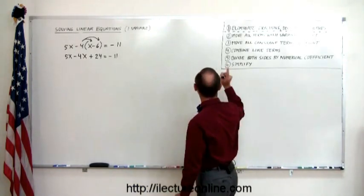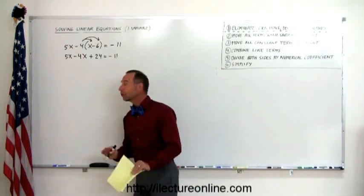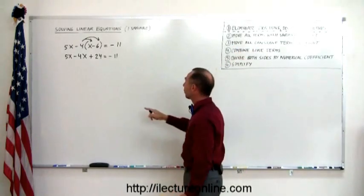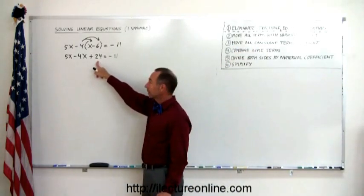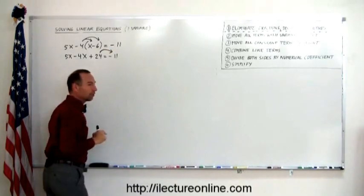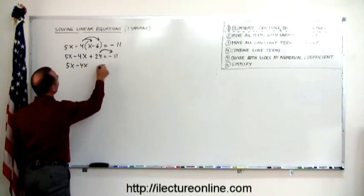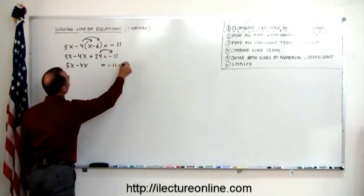So the next step says move all the terms with the variable to the left. And they're already there. So we don't need to do that. Next step, move all the constant terms to the right. We have one over here. That moves to the right. It's a positive 24. That becomes a negative 24. So we have 5x minus 4x equals minus 11 minus 24.